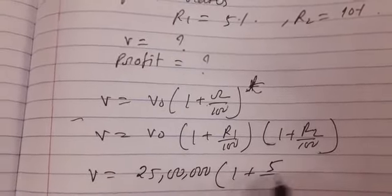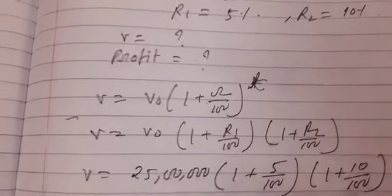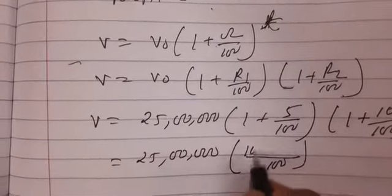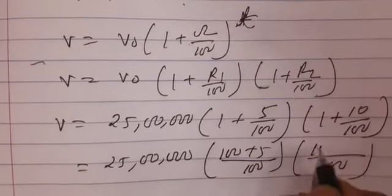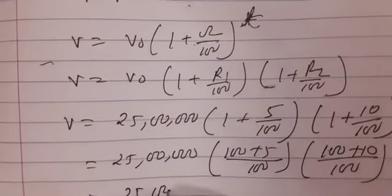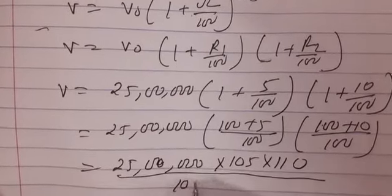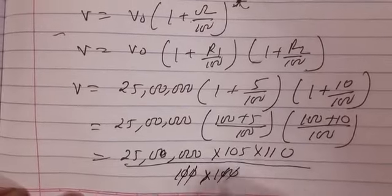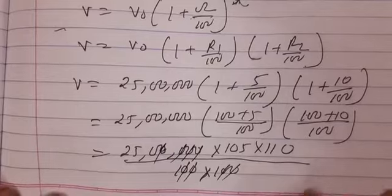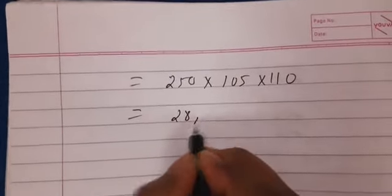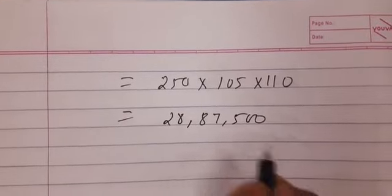V equals 25 lakh × (100 + 5)/100 × (100 + 10)/100 = 25 lakh × 105/100 × 110/100. Now simple calculation: 250 × 105 × 110. When you multiply, you will get 28,87,500. This is the amount produced after two years.